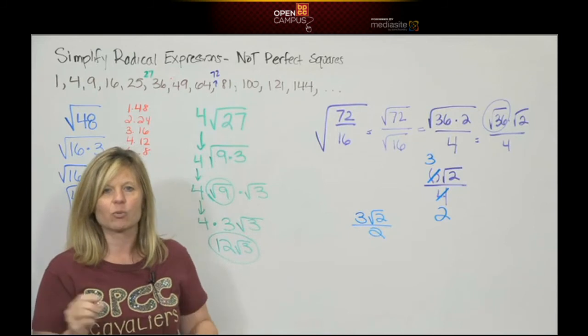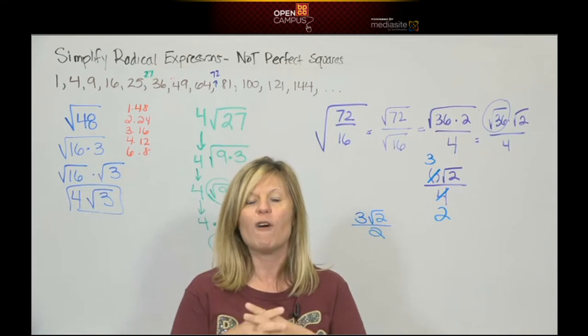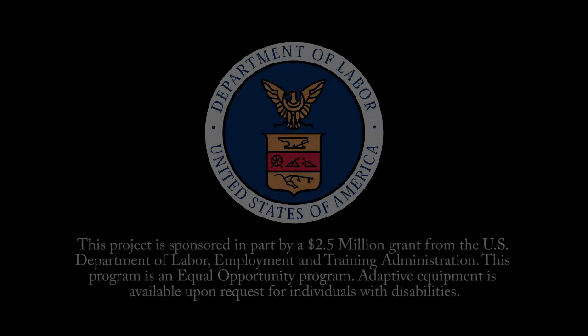So the moral of the story is real simple. To simplify our radical expression, if we're dealing with square root, you find the biggest perfect square. See you in the next module.